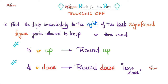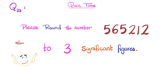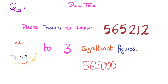Some pearls for the pros on how to round off: find the digit immediately to the right of the last significant figure. In the last example it was 7, which is higher than 5 — five and up, you round up; four and down, you round down, i.e. leave alone. Here's the same first example again — we want three significant figures. Look to the number immediately to the right of the last significant figure: it's a 2. Is it 5 and up or 4 and down? It's 4 and below, so you leave the 5 alone — you do not round it up to 6. The answer is 565,000, with three trailing zeros that are not significant.